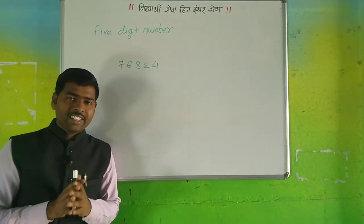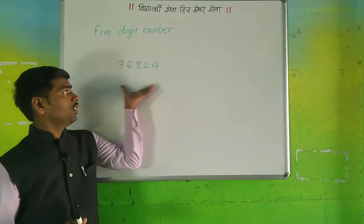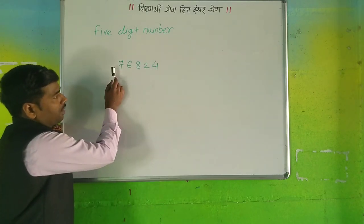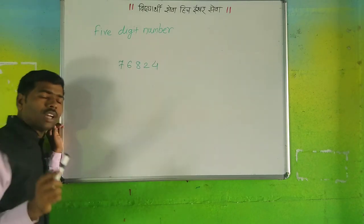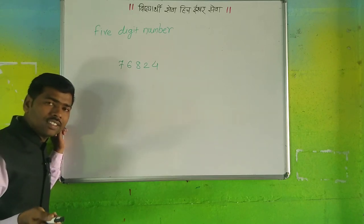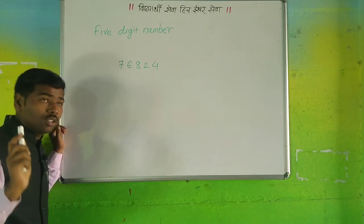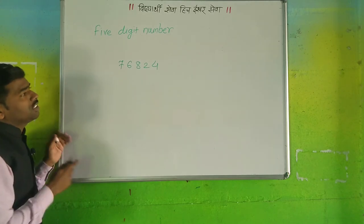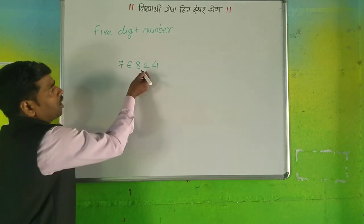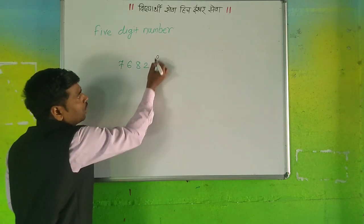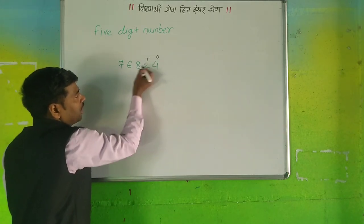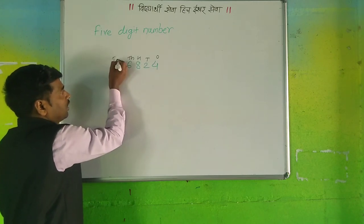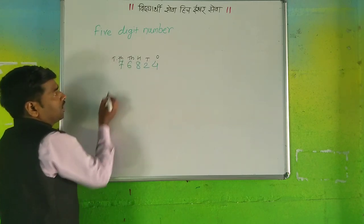Now the next number in front of you — see here, what is this? 4, 2, 8, 6, 7. How can you read this five digit number? If you want to read a five digit number, just write their places: ones, tens, hundreds, thousands, and ten-thousands.